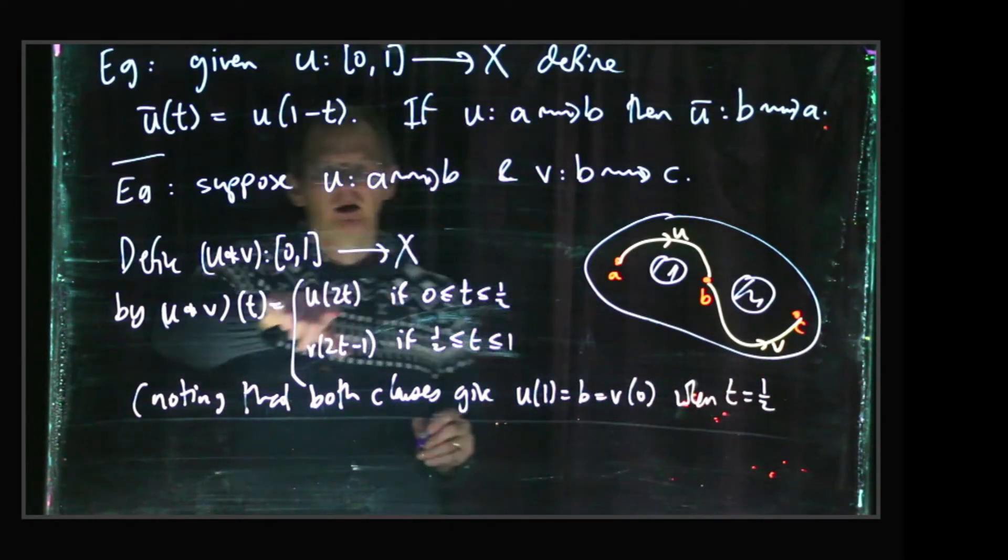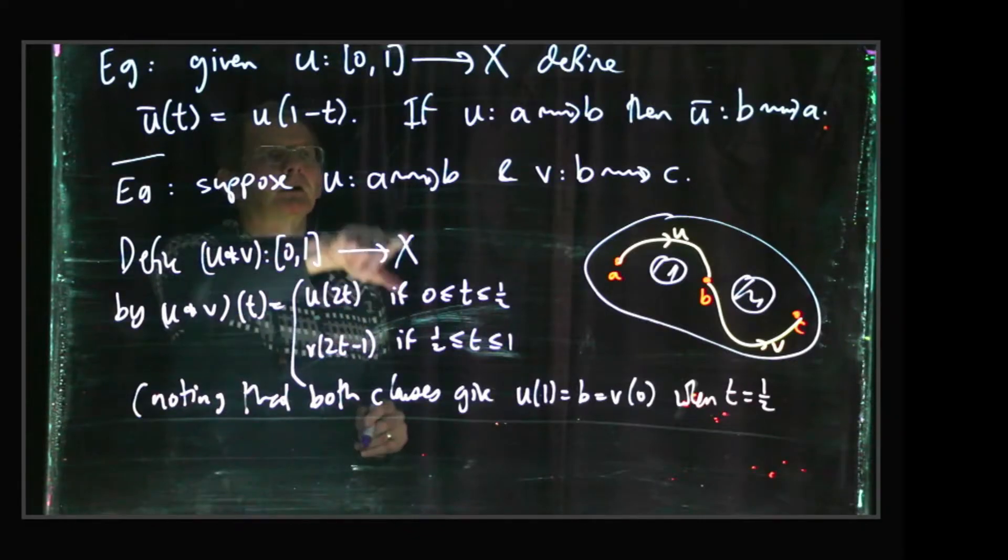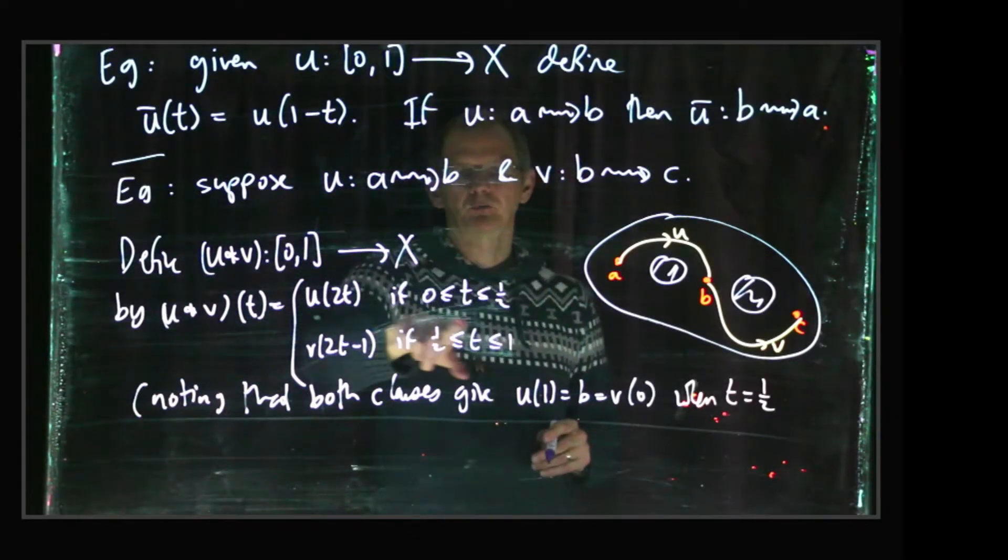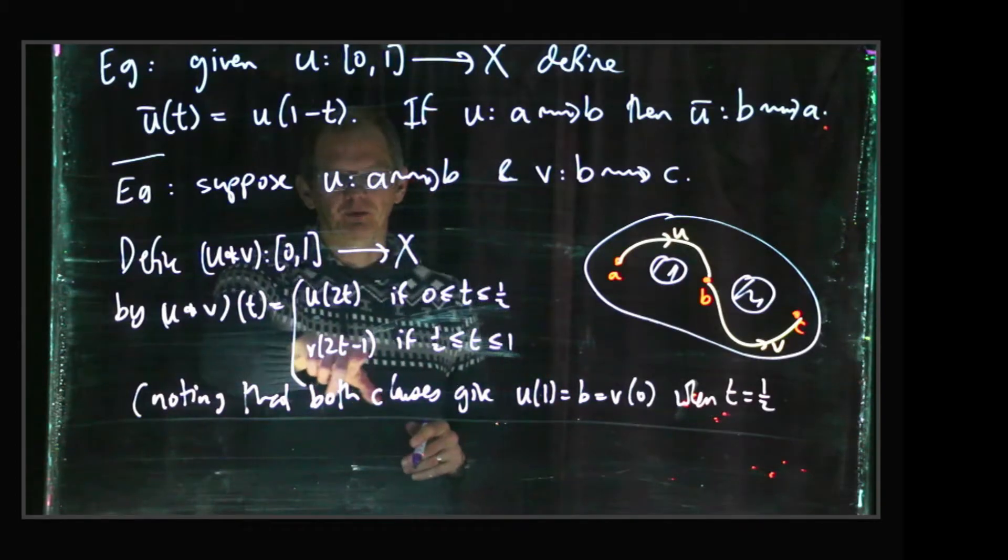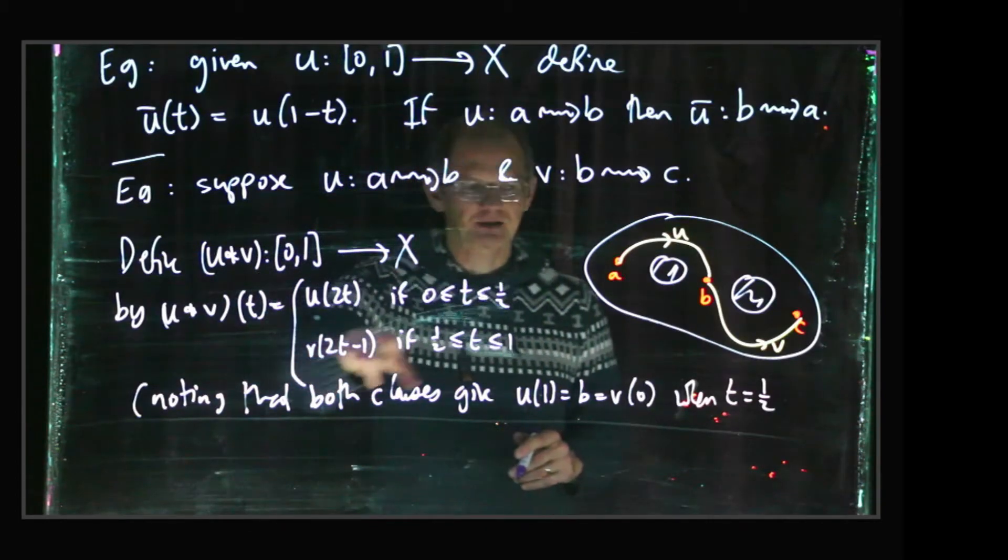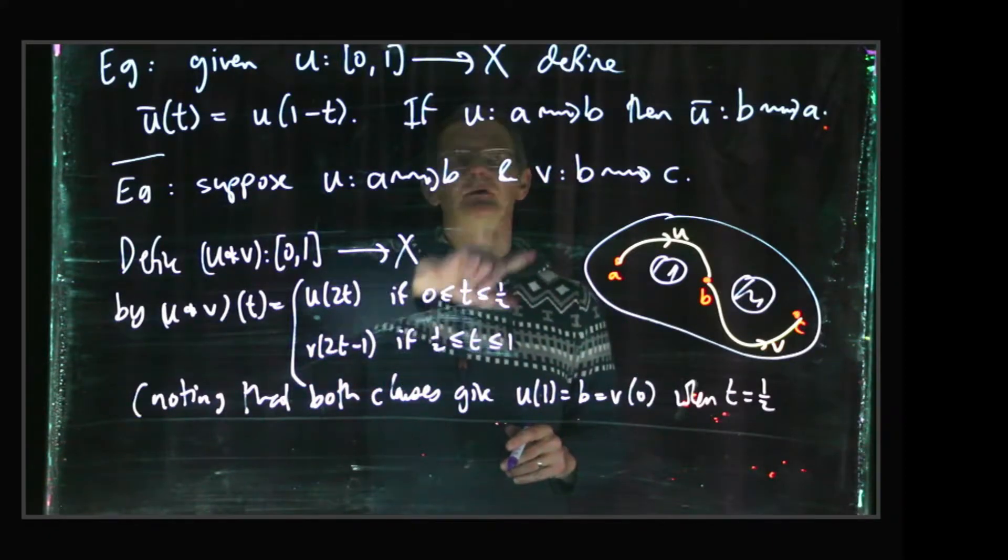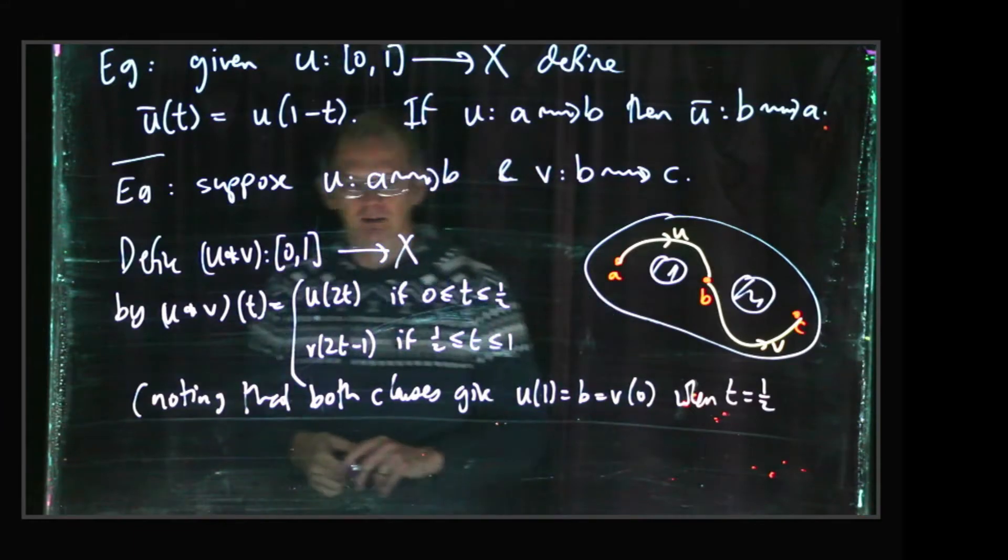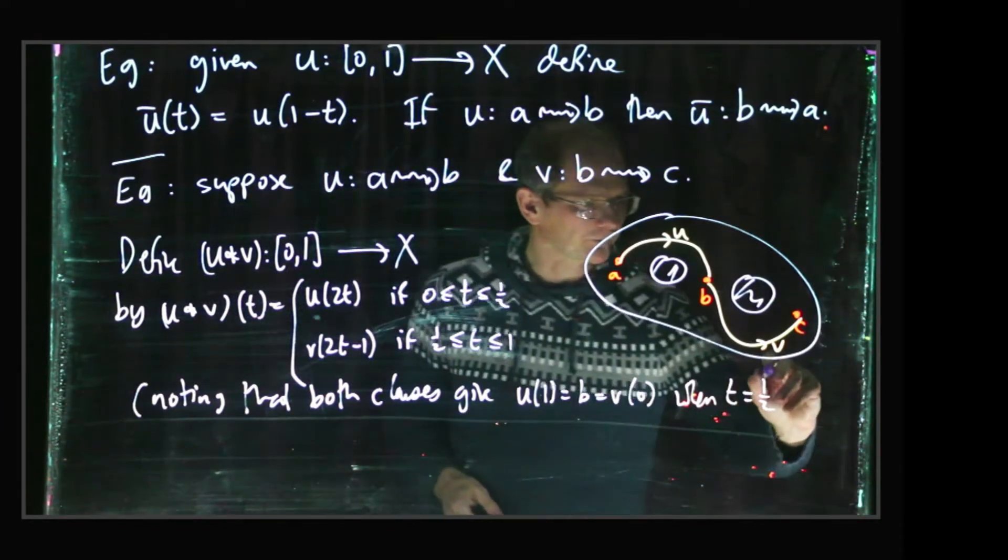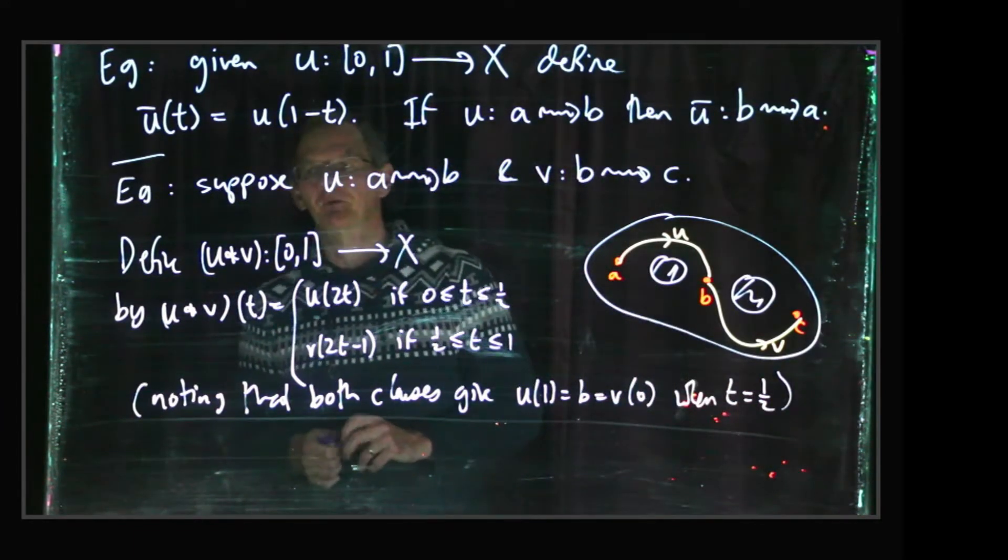Well, if t is a half, you know, the first clause gives u of 1, but u is a path from a to b, so u(1) is just b. And second clause gives v of twice a half minus 1, which is v of 0. But v is a path from b to c, so v(0) is b. So the two clauses are consistent when they're both operational.